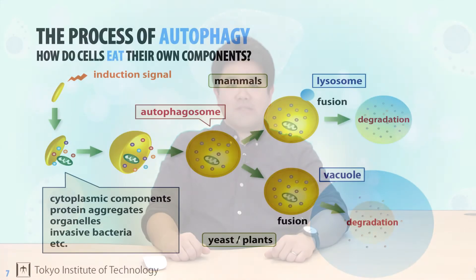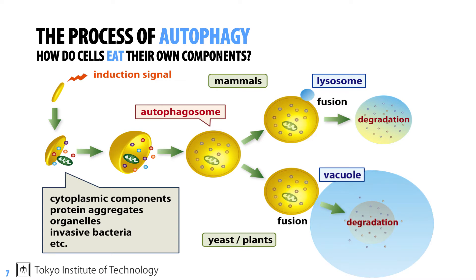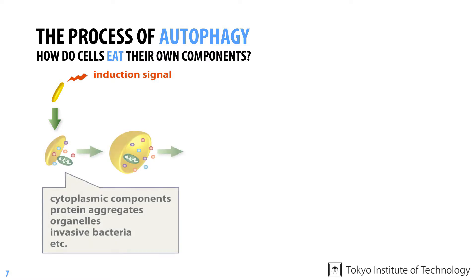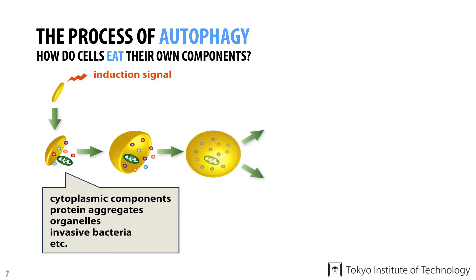Let's start learning about autophagy. This slide shows the process of autophagy. As mentioned earlier, autophagy is a phenomenon that occurs within cells. Autophagy is triggered by different signals, and when cells receive these signals, small flattened membranes start to appear within cells. These membranes expand to form a structure a bit like a cup, before finally closing to form spherical membrane vesicles.